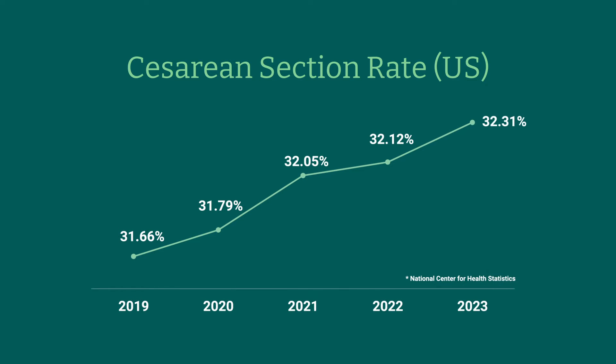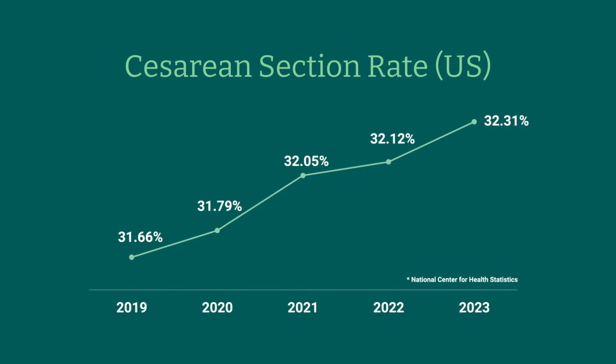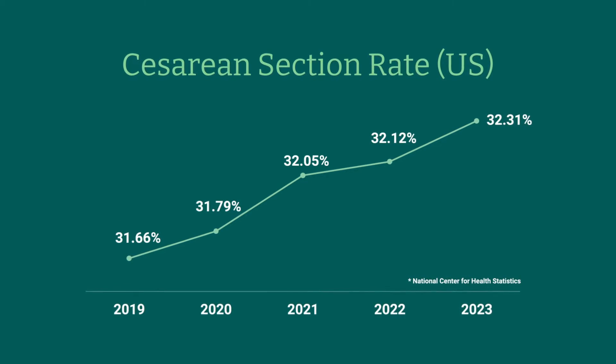The cesarean section rate continues to climb in the United States, hitting an all-time high of 32.31% in 2023. Although some feel this increase protects many neonates from the various risks associated with difficult labors.